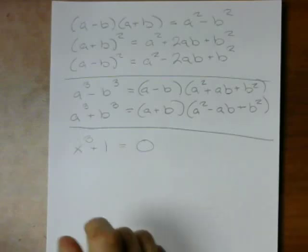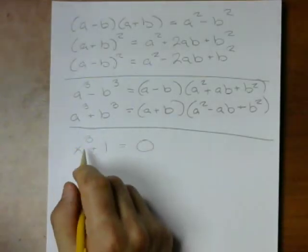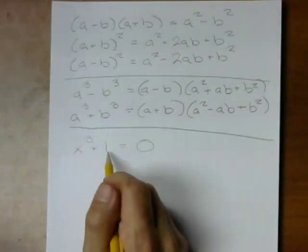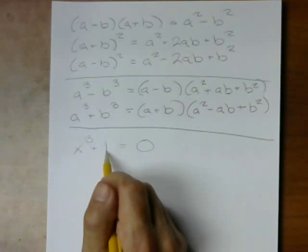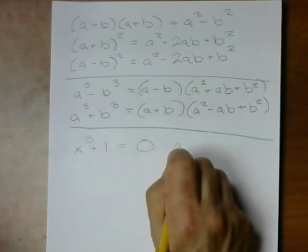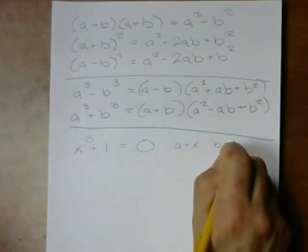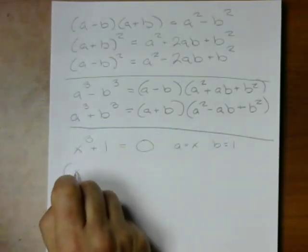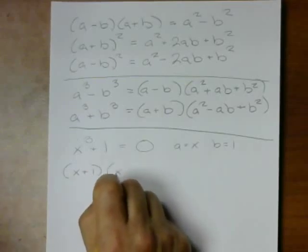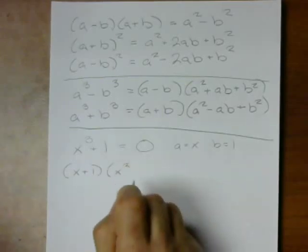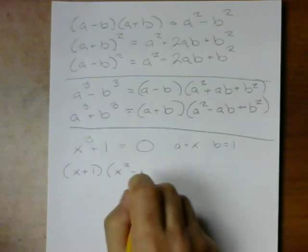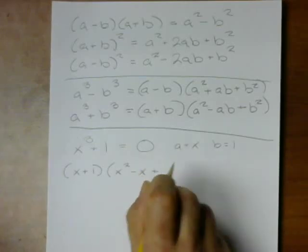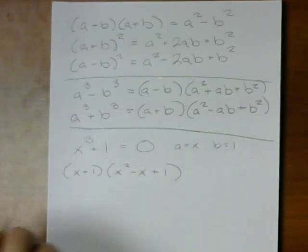So, what could we get from this? Well, I see it is a cube plus another cube. Because 1 is a cube, it's 1 times 1 times 1. So, by letting a be x and b be 1, I can now use this formula. I get x plus 1 times x squared minus x times 1 plus 1.